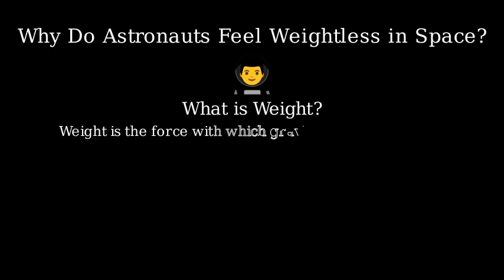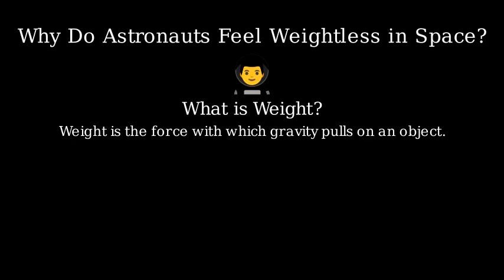First, let's understand what weight actually is. Weight is the force with which gravity pulls on an object. On Earth, an object of mass m has weight equal to W = m × g, where g is approximately 9.8 meters per second squared, Earth's gravitational acceleration.